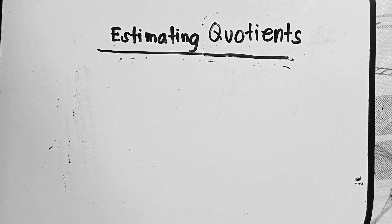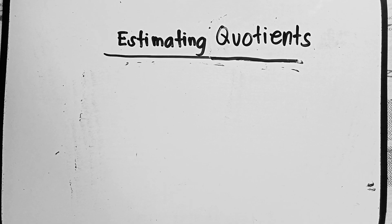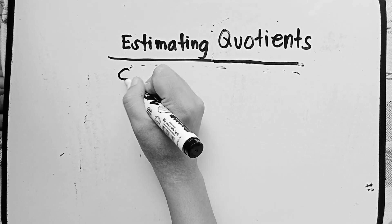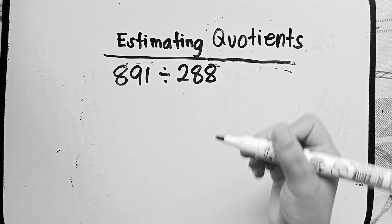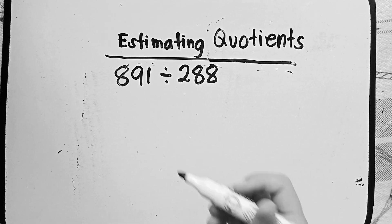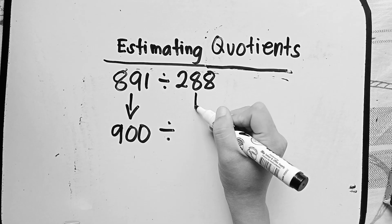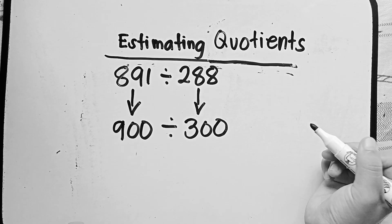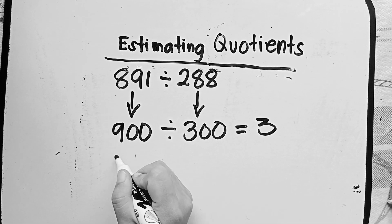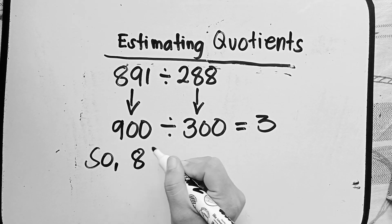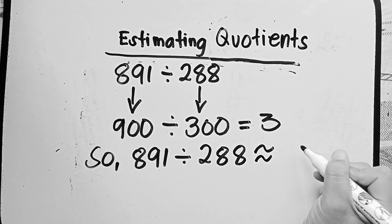For our last example, we have estimating quotients. We will use rounded numbers to estimate quotients. Example number 5: 891 divided by 288. By rounding to the nearest hundred, 891 becomes 900 divided by 288 becomes 300. So if we divide the two, we'll get 3. So, 891 divided by 288 is approximately equal to 3.